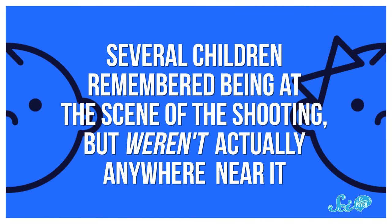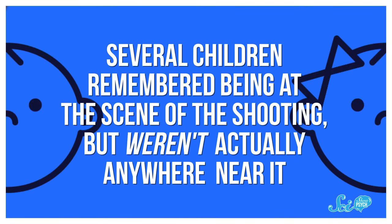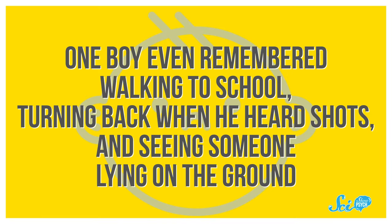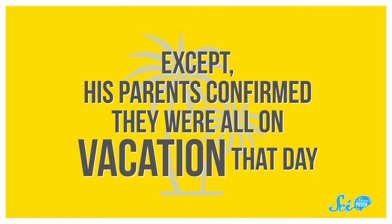Another study from 1989 surveyed about 130 children whose school was attacked by a shooter. Several children remembered being at the scene of the shooting, but weren't actually anywhere near it. One boy even remembered walking to school, turning back when he heard the shots, and seeing someone lying on the ground - except, his parents confirmed that they were on vacation that day.